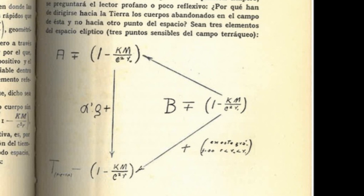Through the course of the static acceleration increase, the elliptical trajectory that the body follows towards space towards the earth is significantly confused with the vertical one, that is, it appears as the development of a straight line normal to the surface of the planet. However, the layman or unreflective reader will ask why should bodies abandoned in its field go towards the earth and not towards any other point in space.